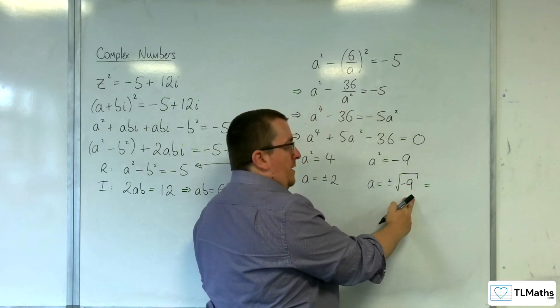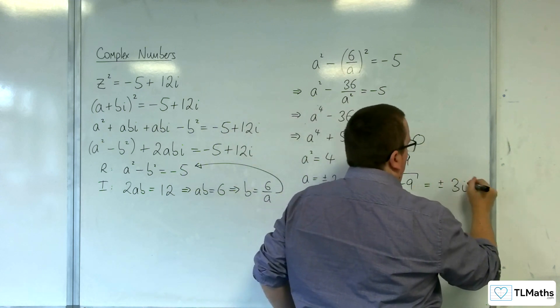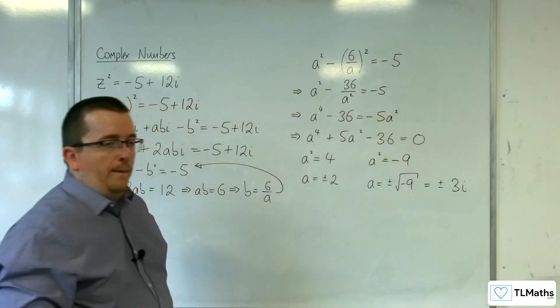So, square root of -9 is 3i. So we've got ±3i coming from this.